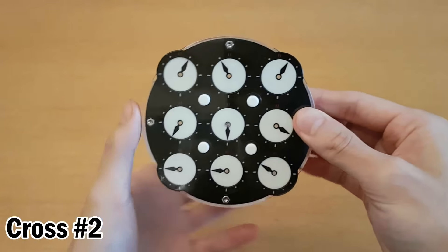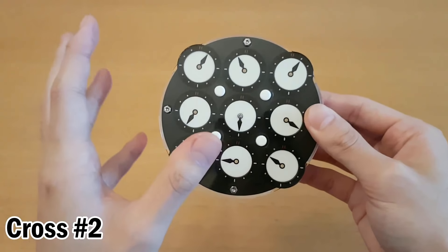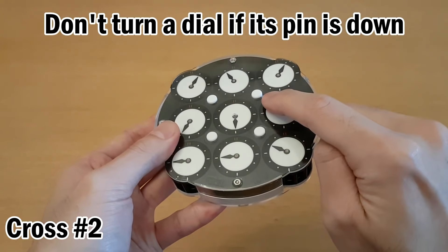Next, we'll move on to the other side and solve the cross again. Now it's important here that you don't turn a dial if its pin is down.